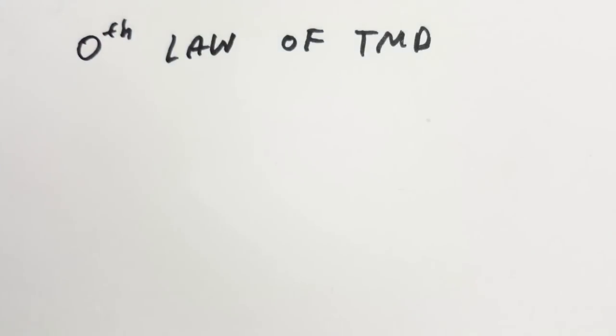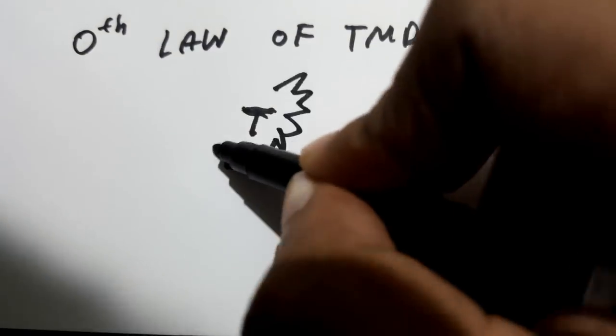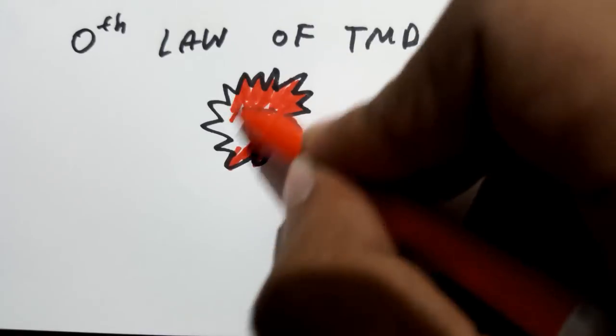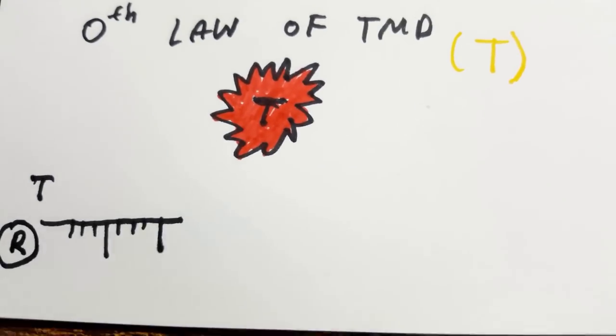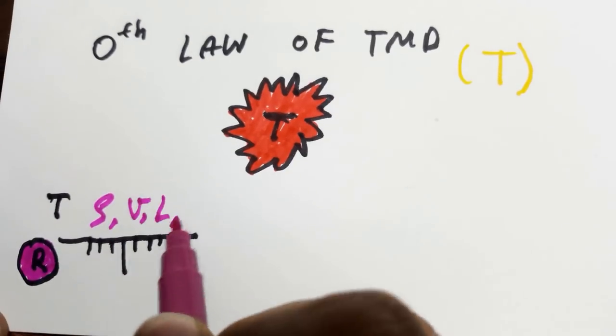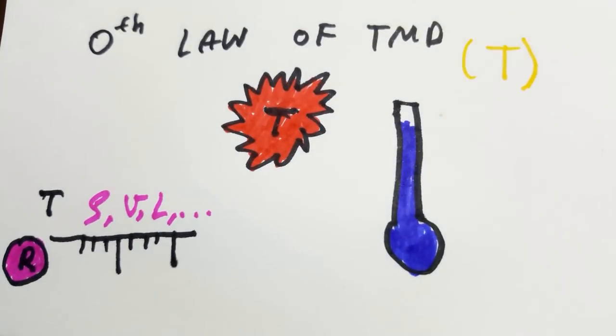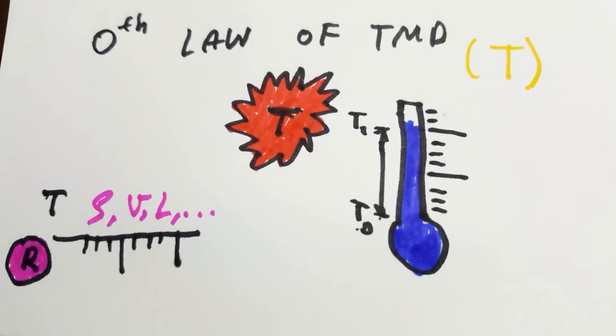It is the basis of temperature measurements which is a distinct property of a thermodynamic system which is measured using a thermometer selecting a reference body taking into account a certain property that changes with temperature. A common example is a mercury in glass thermometer which uses length to indicate temperature.